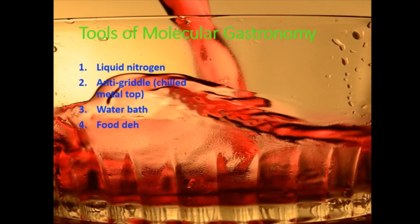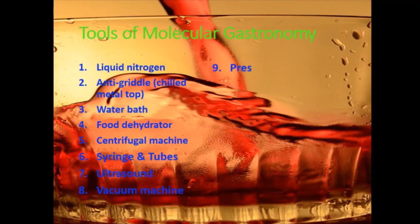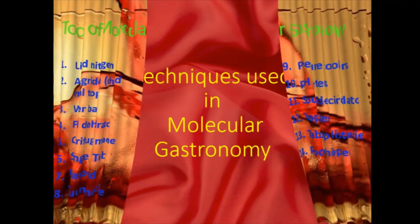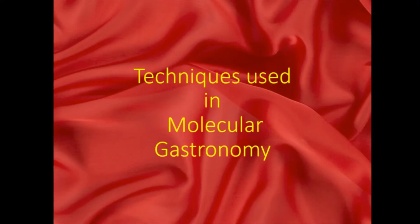Tools of Molecular Gastronomy include: Liquid Nitrogen, Anti-griddle or chilled metal top, water bath, food dehydrator, centrifugal machine, syringe and tubes, ultrasound, vacuum machine, pressure cooker, pH meters, sous vide circulator, vaporizer, table top distilleries, and food ripper. These are some of the examples of tools that can be used to create dishes using Molecular Gastronomy techniques.